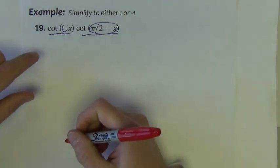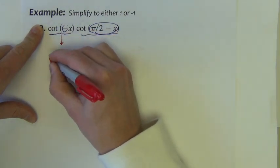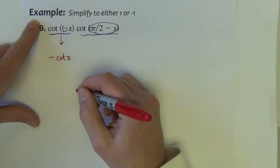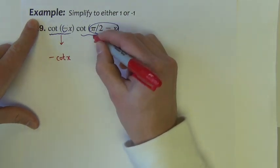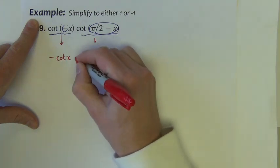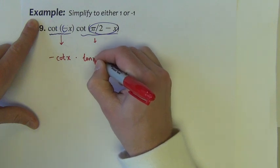If you look on your even-odd identities, cotangent of negative x, this thing right here, this guy is equal to negative cotangent x. And the cotangent of pi over 2 minus x, this guy right here, is equal to the tangent of x.